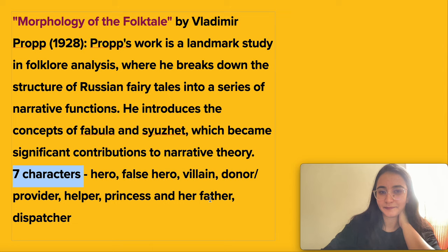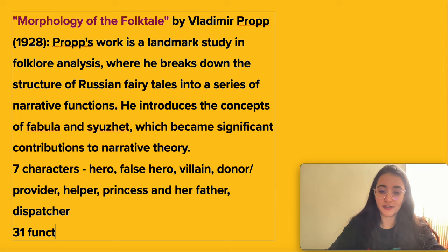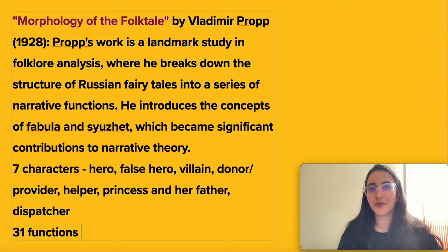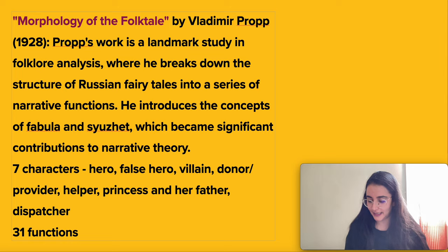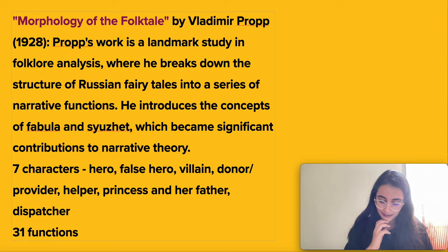After identifying the seven characters, Propp further identified 31 functions in fairy tales. Examples of these functions include: violation, delivery, trickery, complicity, the hero's reaction, counteraction, departure, the first function of the donor, receipt of a magic agent, spatial transference, struggle, branding, and so on. There are 31 functions in total. This is the core of Morphology of Folk Tales.